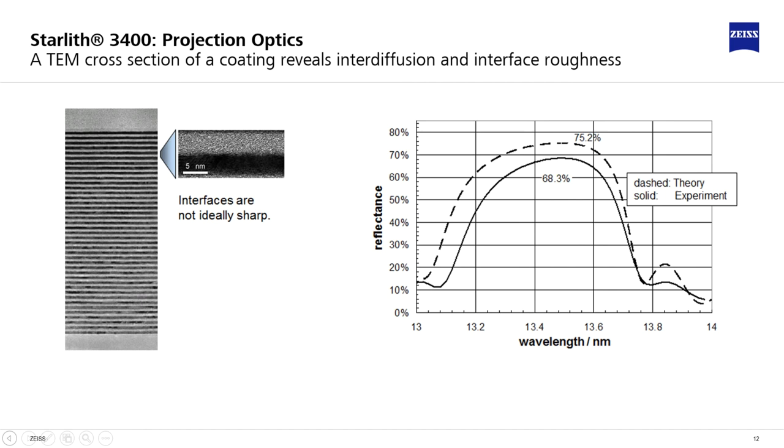Another cause for low reflectance is the crystallinity of molybdenum films, leading to a certain high spatial frequency roughness of the interface, giving rise to large angle scattering.